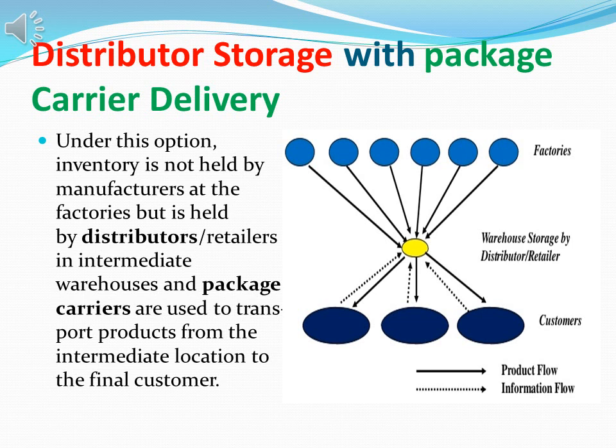The next option is distributor storage with package carrier delivery. Here, products from factories are stored at the distributor's location, and then delivered via a carrier delivery service. Inventory is not held by the manufacturer at factories, but held at a distributor or retailer in intermediate warehouses, and package carriers are used to transport products from the intermediate location to the final customers.